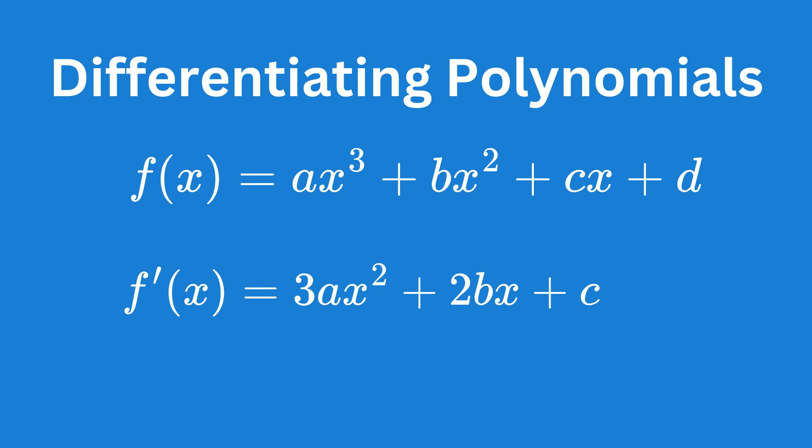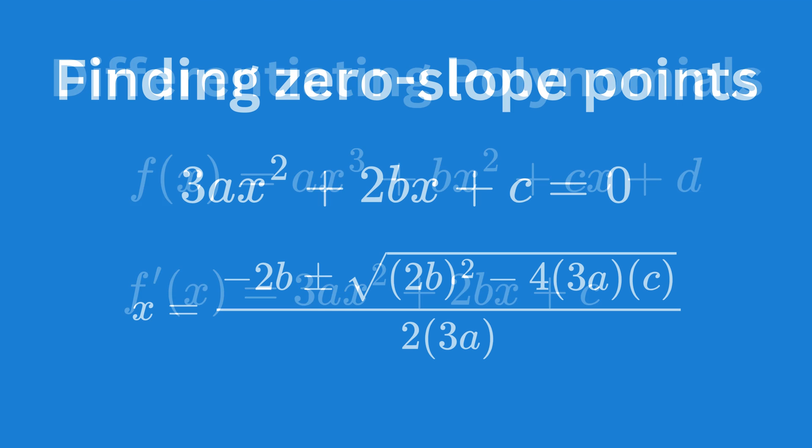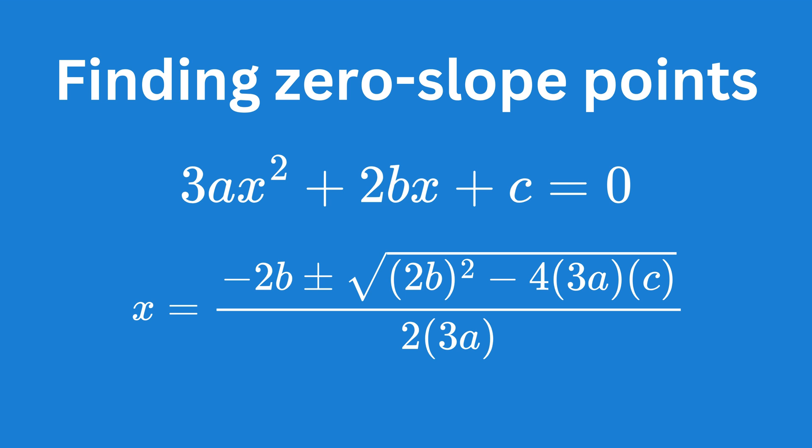This derivative function tells us the slope of the original cubic function at any point x. Turning points occur where the slope of the function is zero — in other words, we need to find the points where the first derivative equals zero. This is where the graph is flat. The derivative is a quadratic equation, and we can solve for x using the quadratic formula, factorization, or completing the square.